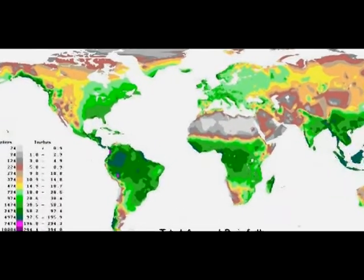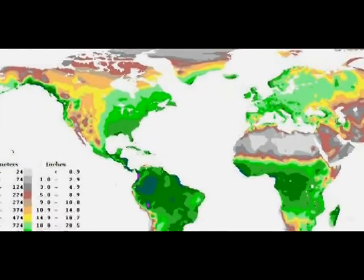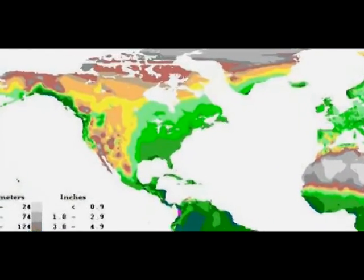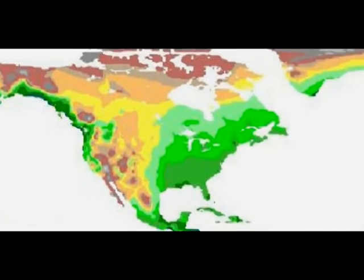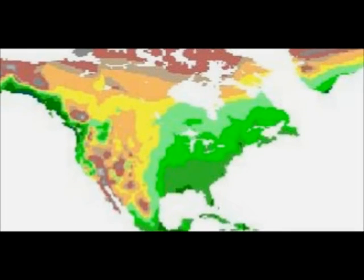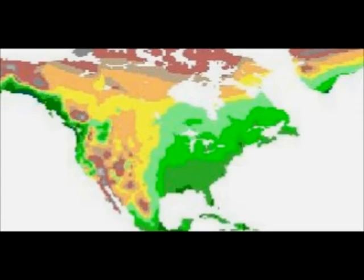Yet if one were to focus on North America, one would think that the western United States — Idaho, Utah, Nevada, Colorado, Arizona, New Mexico — were all at the point of drought and disaster, if not already in one.